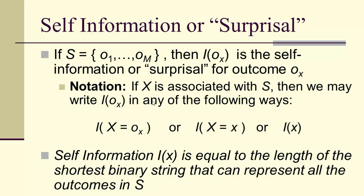Self-information, or surprisal, is the information for a specific outcome. If x is associated with sample space S, we write the information of x as I(x). The self-information is the length of the shortest binary string that can represent all the outcomes in S associated with the variable X.